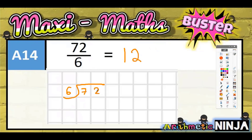The bus stop method would help with this one. So 6 into 7 goes once remainder 1, and that now makes 12. Then 6 into 12 goes exactly twice, so 6 into 72 goes 12 times.